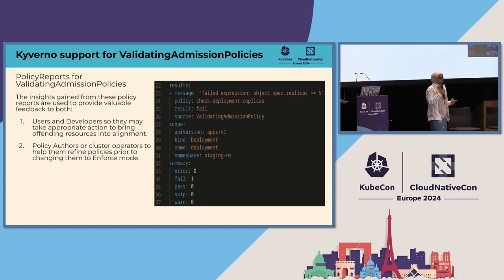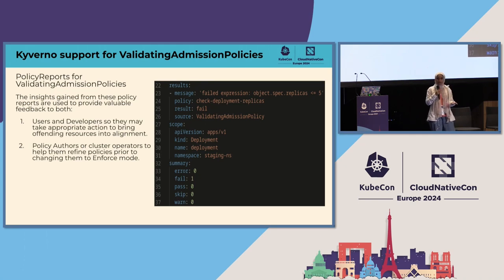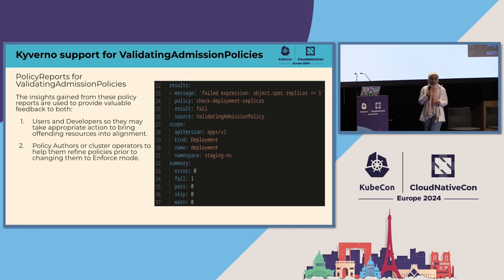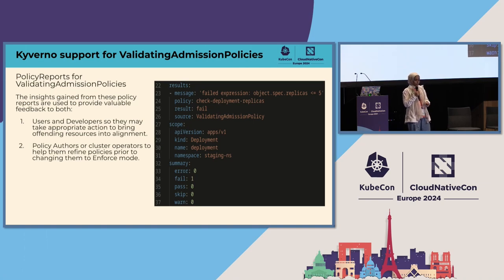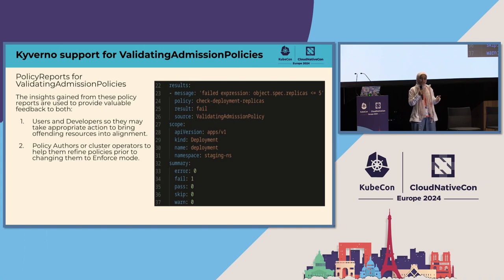Teams can analyze these reports, identify policy violations, and take appropriate actions to rectify them. You can also deploy a new Validating Admission Policy and apply it to existing resources — extremely beneficial for background scanning. The policy report shows the result of applying the policy 'check-deployment-replica' to a deployment in the staging namespace. The result is 'fail' because the deployment has a replica count higher than five, violating the policy.